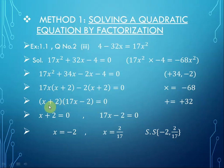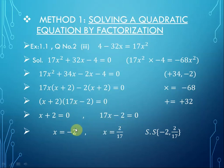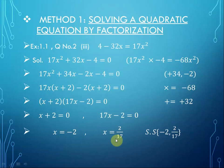We set these two factors separately equal to zero. From the first factor, x plus 2 equals 0, so x equals minus 2. From the second factor, 17x minus 2 equals 0, so x equals 2/17. The solution set is {minus 2, 2/17}.